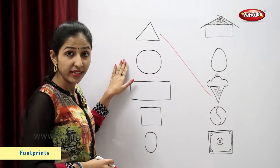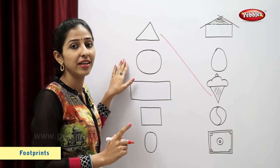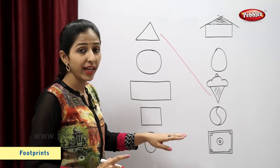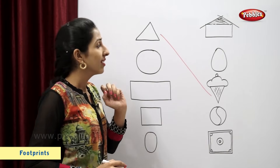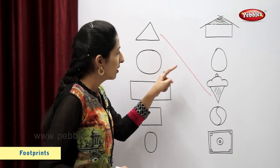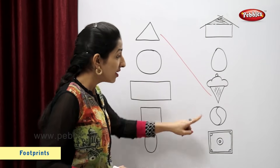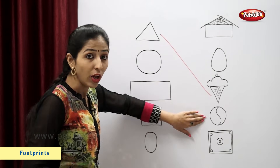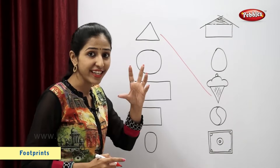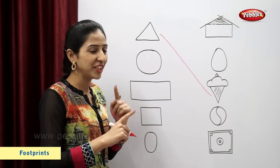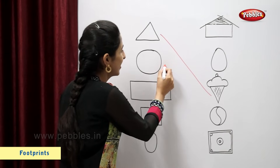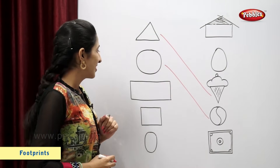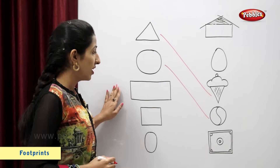This is a circle. Now, you tell me which figure looks like a circle? Ball. This ball looks like a circle. So, let's match.